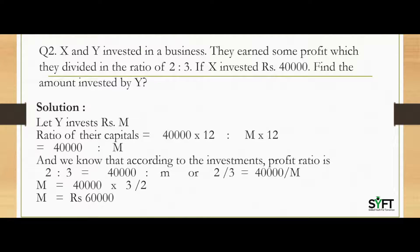The next question is saying that X and Y invested in a business. They earned some profit which they divided in the ratio of 2 is to 3. Now the profit sharing ratio is 2 is to 3. If X invested Rs.40,000, find the amount invested by Y.